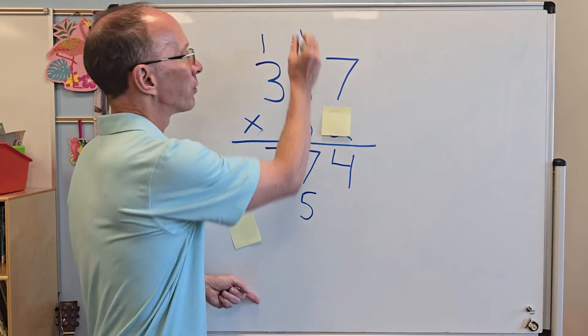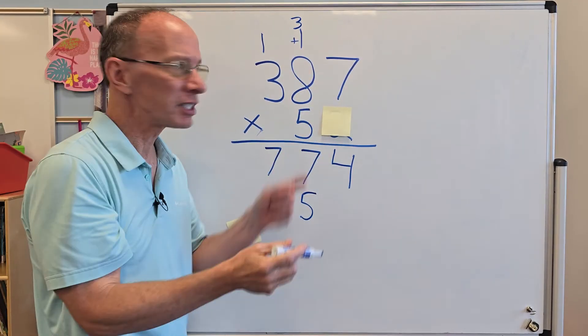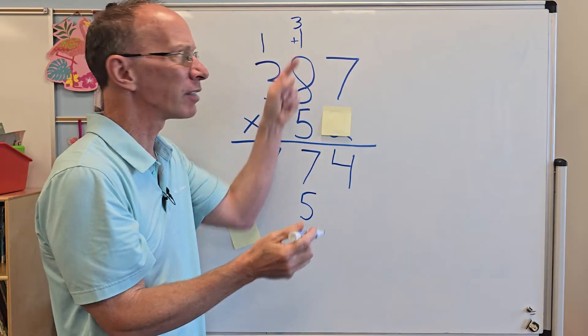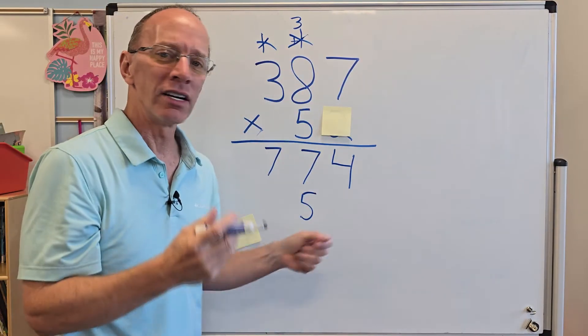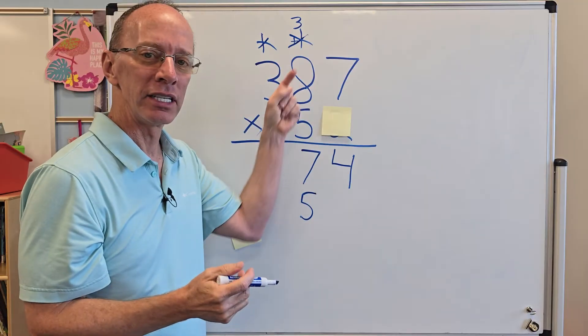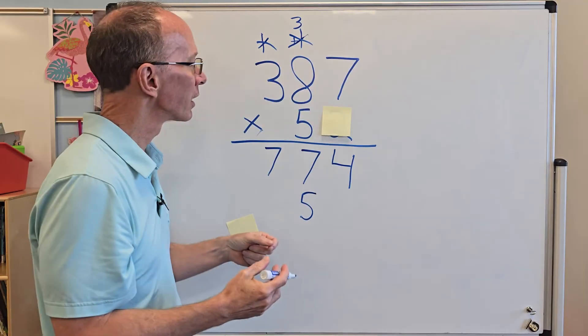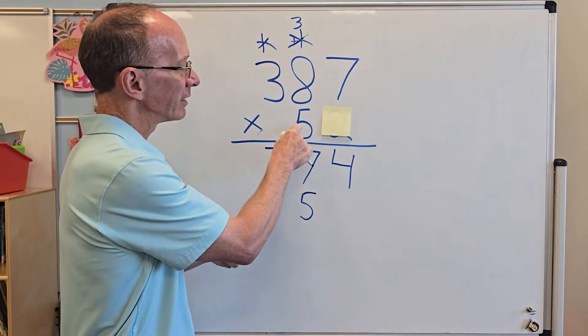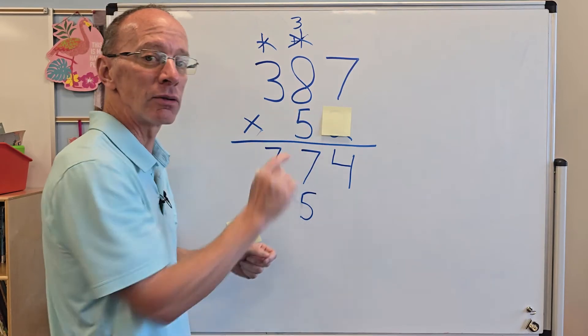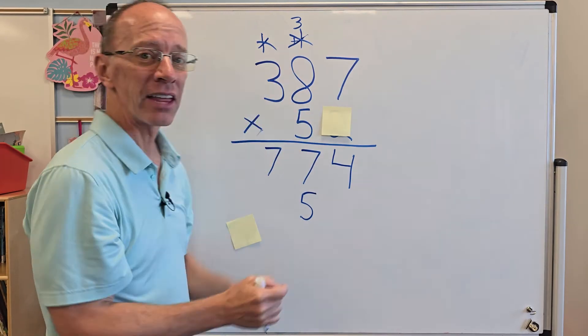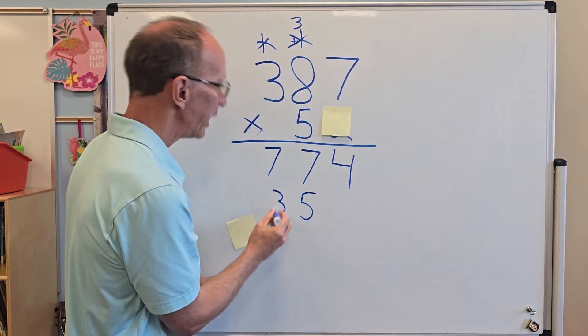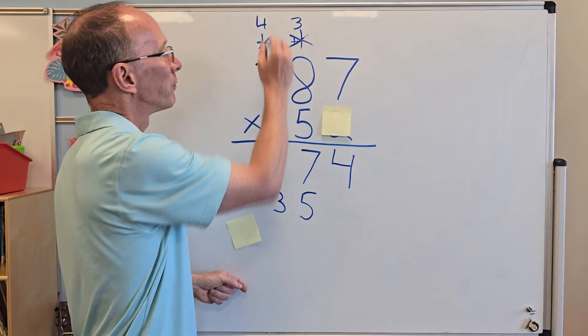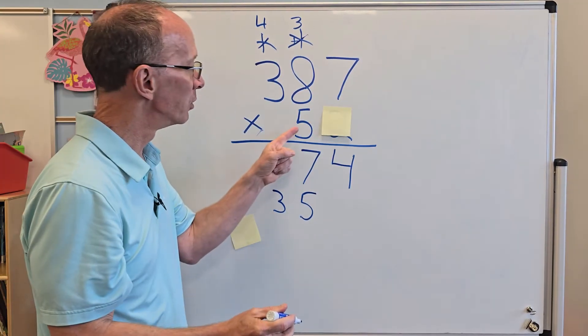And I put the three up here. Now, at first it's like, okay, I got all these numbers. Do I add the one? No, just kind of cross this out here and cross that number out here. Later on, you're going to ignore it, the more multiplication you do. So now I'm going to work on this number here. Five times eight equals 40 plus that three up there. That would be 43. So I put the three right here and I carry the four up there.